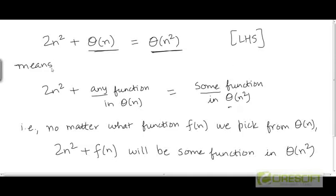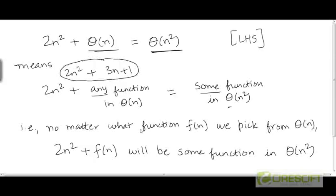For example, I could take 2n-squared and add to it the function 3n plus 1, which is a function in big-theta of n. The resulting function 2n-squared plus 3n plus 1 is going to be a function in the set theta of n-squared. If I had chosen some other function from this set instead of 3n plus 1, say 100n plus 5, then I would have got 2n-squared plus 100n plus 5, which also is a function in big-theta of n-squared.